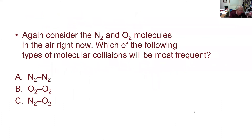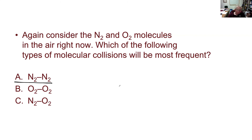There's another question relating to the air around you: which type of collision would be most frequent — nitrogen-nitrogen, oxygen-oxygen, or nitrogen-oxygen? Air is roughly 80% nitrogen and 20% oxygen, so the sizable majority of molecules are nitrogen. Therefore the most frequent collisions are nitrogen-nitrogen, just because there are so many more nitrogen molecules present. We could estimate the fraction of nitrogen-nitrogen collisions using mole fractions.